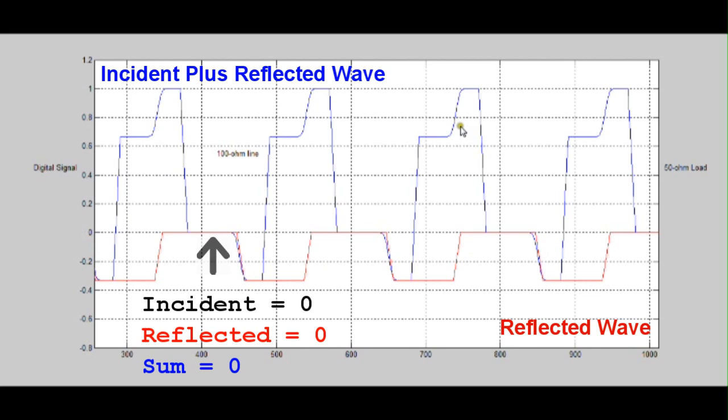Separating out the reflected wave, or the incident wave, from the overall voltage on the line can be helpful, not just to improve our intuition, but it's at the heart of an important concept, S parameters.